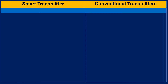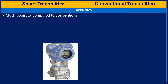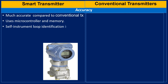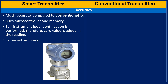Comparing both transmitters in terms of accuracy: smart transmitters are much more accurate compared to conventional transmitters because they use a microcontroller and memory. In smart transmitters, self-instrument loop identification is performed in signal processing, and therefore a zero value is added to the reading, which increases the accuracy of smart transmitters.